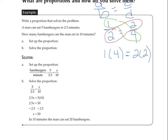Here's the first example: write a proportion that solves the problem. A man can eat five hamburgers in two-and-a-half minutes. How many hamburgers can the man eat in ten minutes? We're going to set up the proportion and solve it. When solving, we're going to use the cross-products rule to make an equation so we can solve for an unknown. When using proportions to solve, you need to identify two units or two kinds of things being compared.